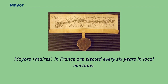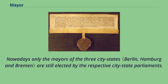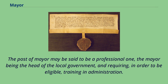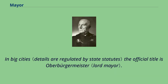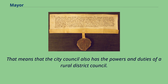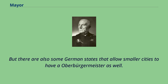Mayors in France are elected every six years in local elections. In Germany, local government is regulated by state statutes. Nowadays only the mayors of the three city-states are still elected by the respective city-state parliaments; in all the other states the mayors are now elected directly by EU citizens living in that area. The post of mayor may be said to be a professional one, the mayor being the head of the local government, requiring training in administration in order to be eligible. In big cities the official title is Oberbürgermeister. In these cities, a simple mayor is just a deputy responsible for a distinct task. The leader of a rural district council is called Landrat, and the chief mayor also has the duties and powers of a Landrat. Some German states allow smaller cities to have an Oberbürgermeister as well.